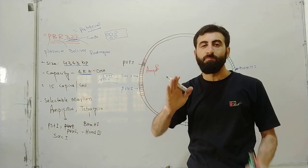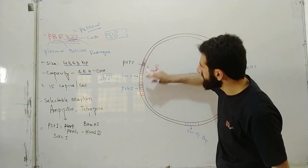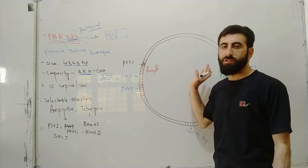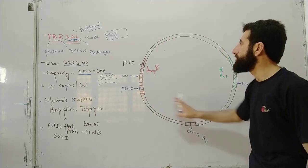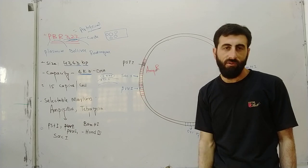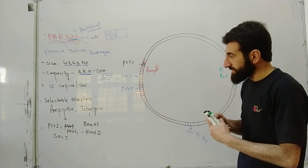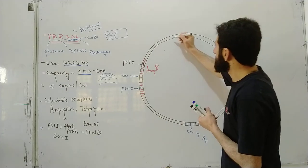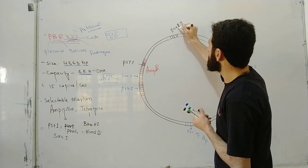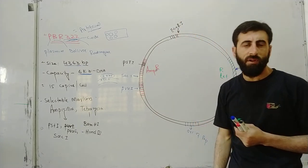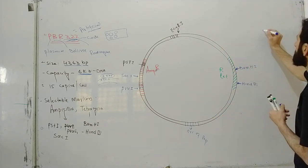Restriction endonuclease enzymes are very specific. For example, if you use SalI, it cuts at a specific location on the plasmid. Each enzyme recognizes and cuts only its specific sequence. We use the same restriction enzyme on both the plasmid and the human cell DNA.